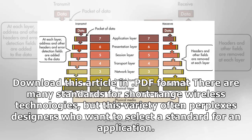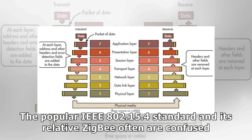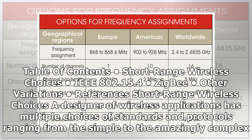There are many standards for short-range wireless technologies, but this variety often perplexes designers who want to select a standard for an application. The popular IEEE 802.15.4 standard and its relative ZigBee are often confused — they aren't the same thing. Short-range wireless choices: a designer of wireless applications has multiple choices of standards and protocols, ranging from the simple to the amazingly complex.